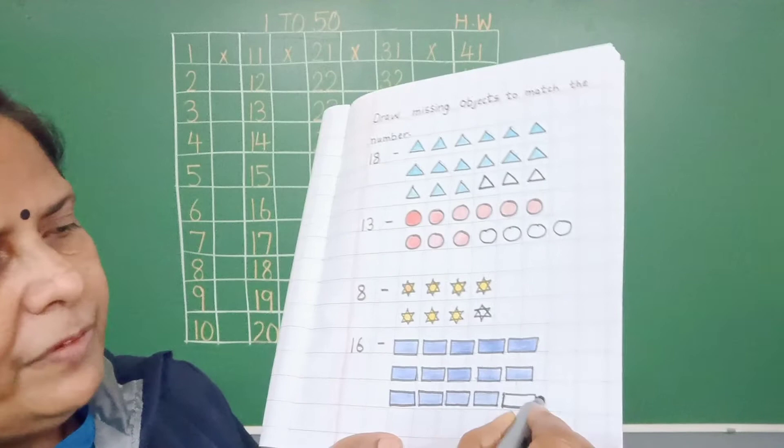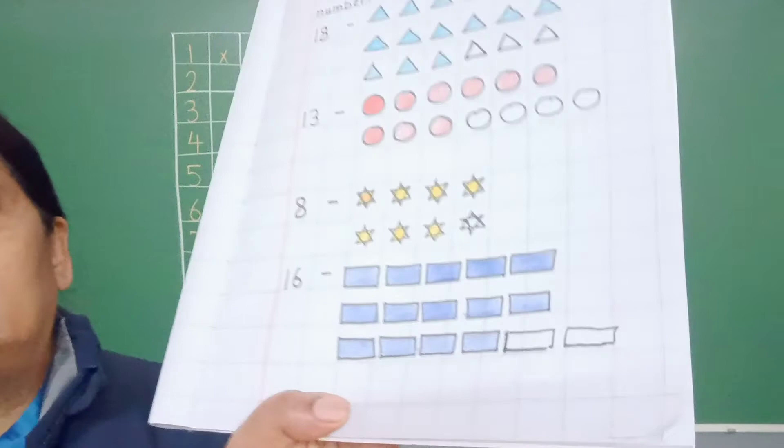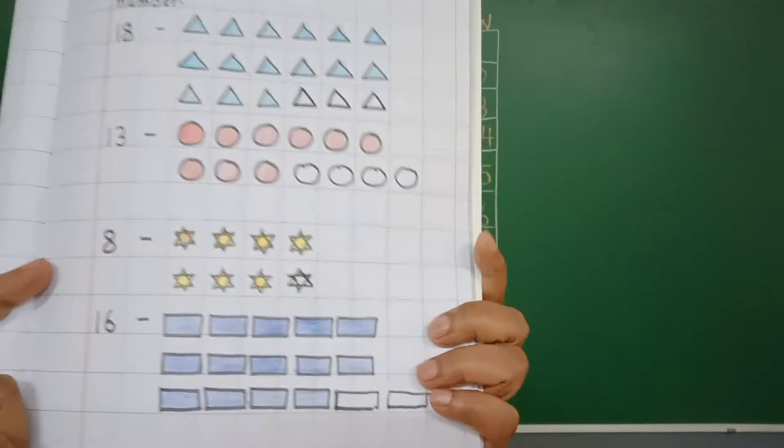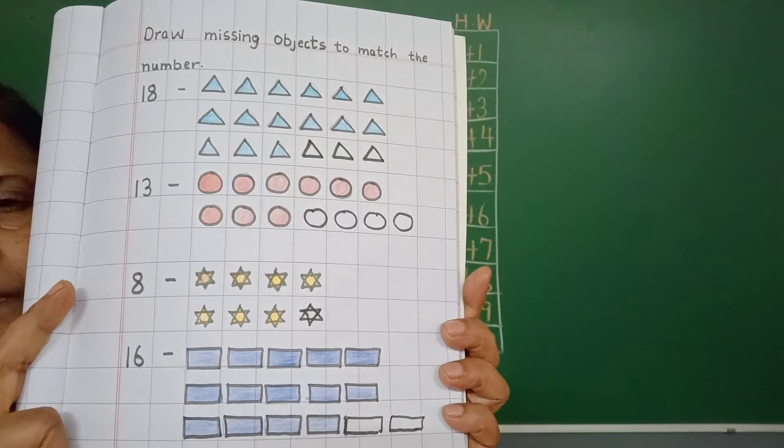Fourteen ke baad kya aata hai? Fifteen. Fifteen ke baad kya aata hai? Sixteen. So how many rectangles are less? Two rectangles are less. So this activity you will do in your homework copy.